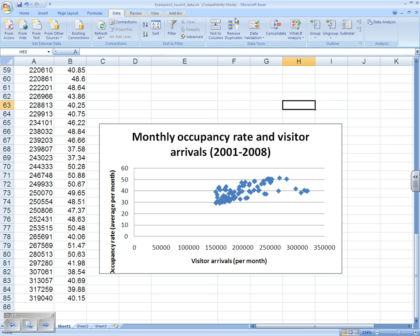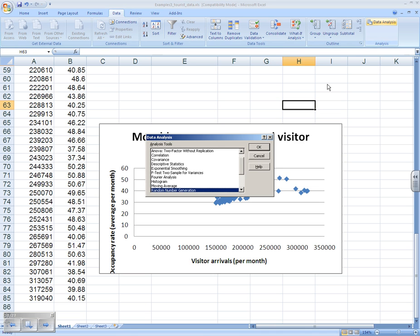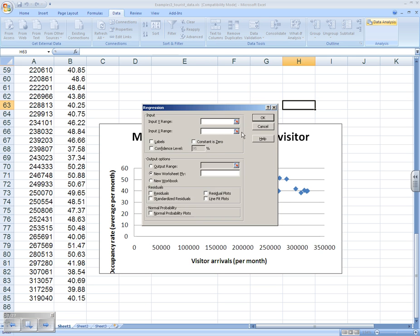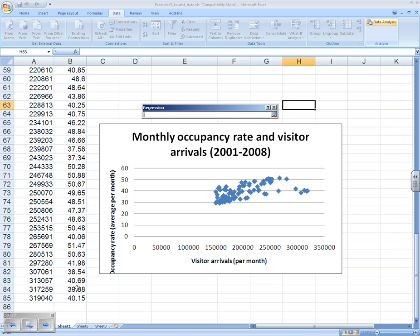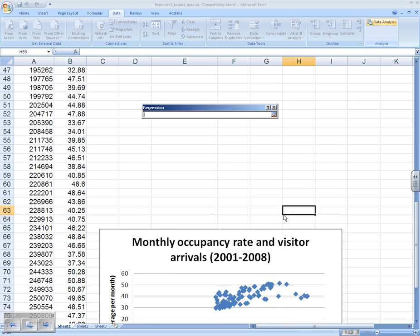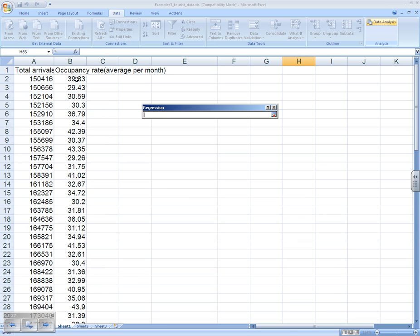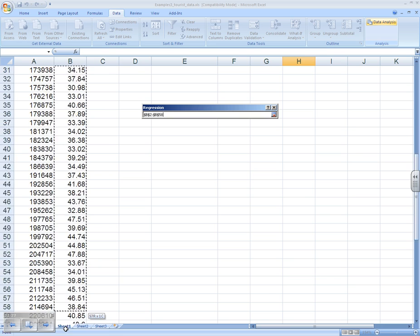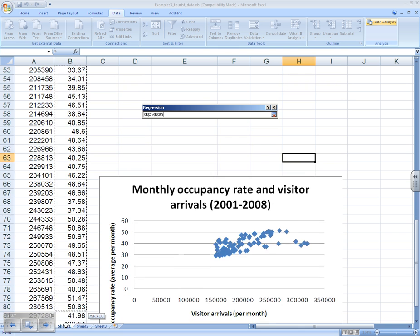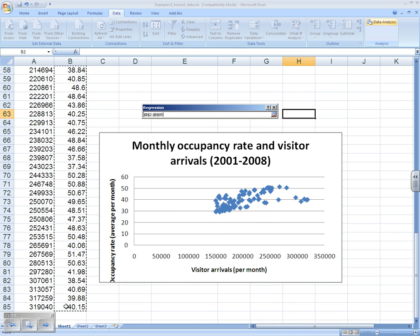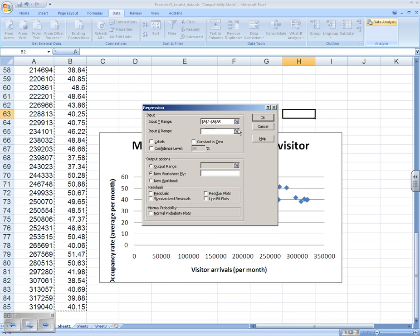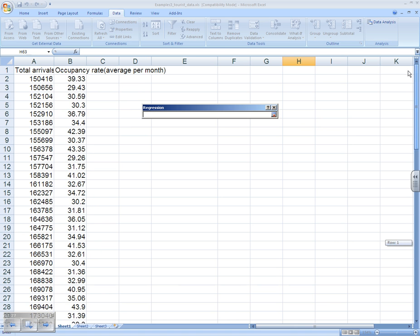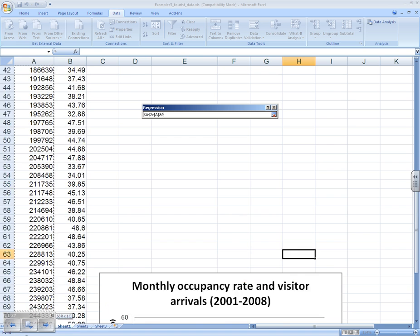Using data, data analysis and choosing the regression option from the list. Clicking OK. Excel asks for the Y values, the occupancy rate in this case. Selecting that set of data. Then Excel asks for the X values, input X range. Our first column, our total arrivals. Highlighting this column for the X values.